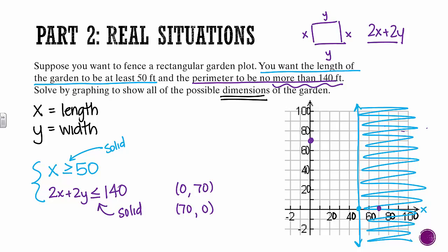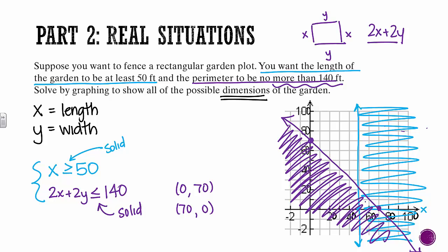I'll draw our solid line and stop and think about what no more means. This line right here represents everything that's exactly 140 feet. We want our perimeter to be no more than that, which means we're going to shade everything below. So our solution area for this problem is this super tiny little triangle right in here.